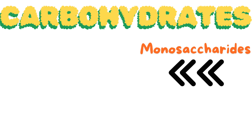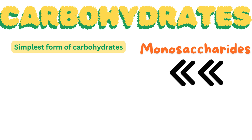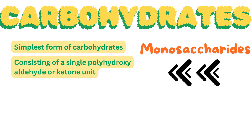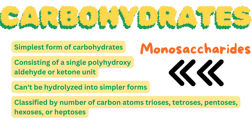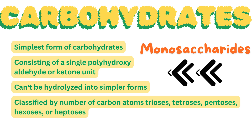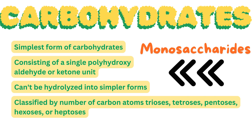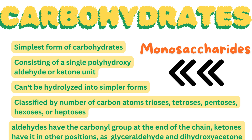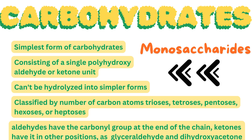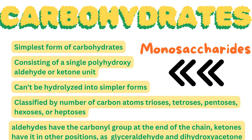Monosaccharides are the simplest forms of carbohydrates, consisting of a single polyhydroxyaldehyde or ketone unit. These sugars can't be hydrolyzed into simpler forms. Depending on the number of carbon atoms, they can be classified as trioses (3-carbons), tetroses (4-carbons), pentoses (5-carbons), hexoses (6-carbons), or heptoses (7-carbons). Aldehydes have the carbonyl group at the end of the chain, while ketones have it in other positions, as seen in molecules like glyceraldehyde and dihydroxyacetone.